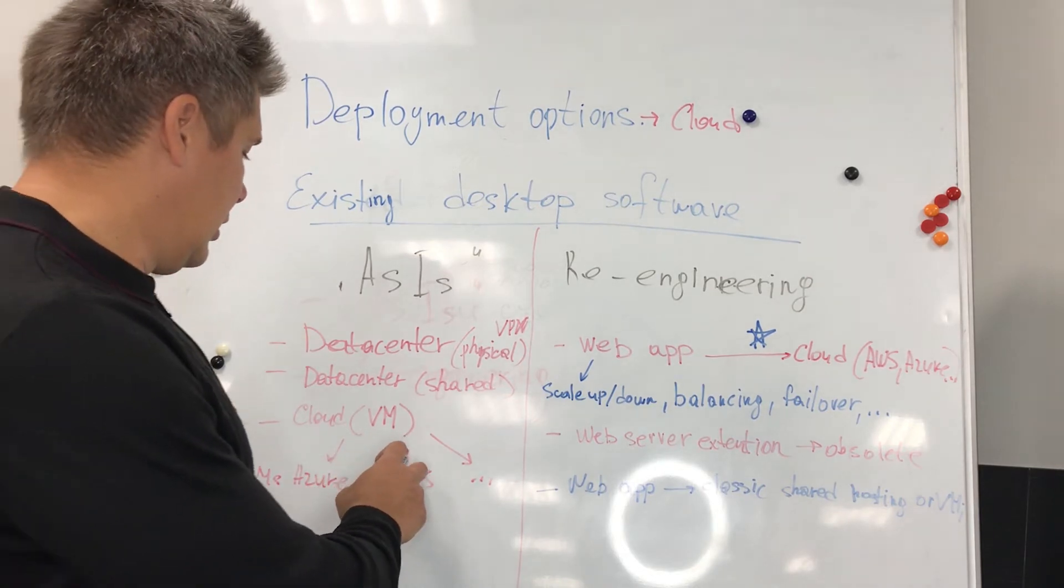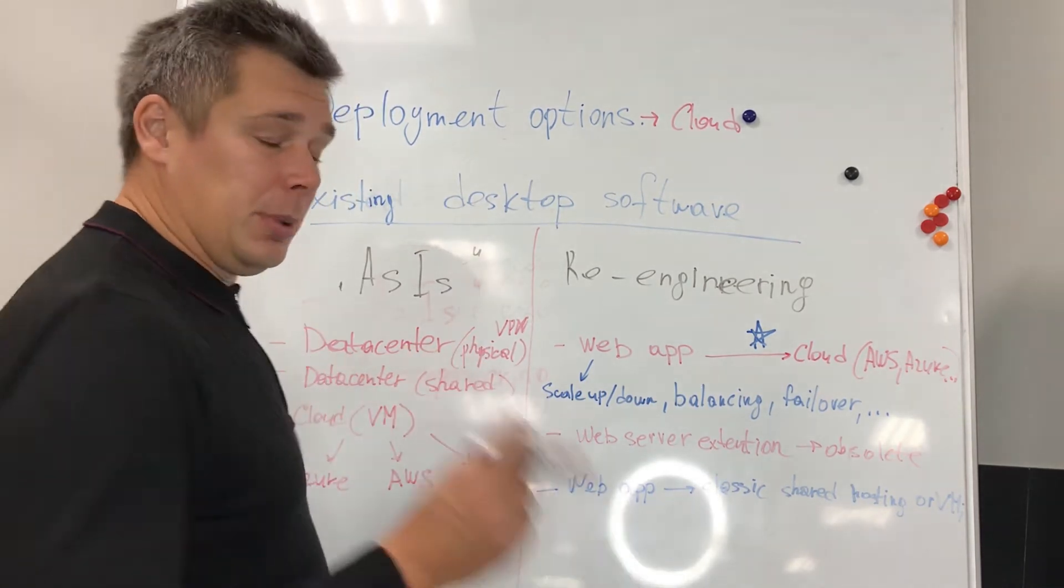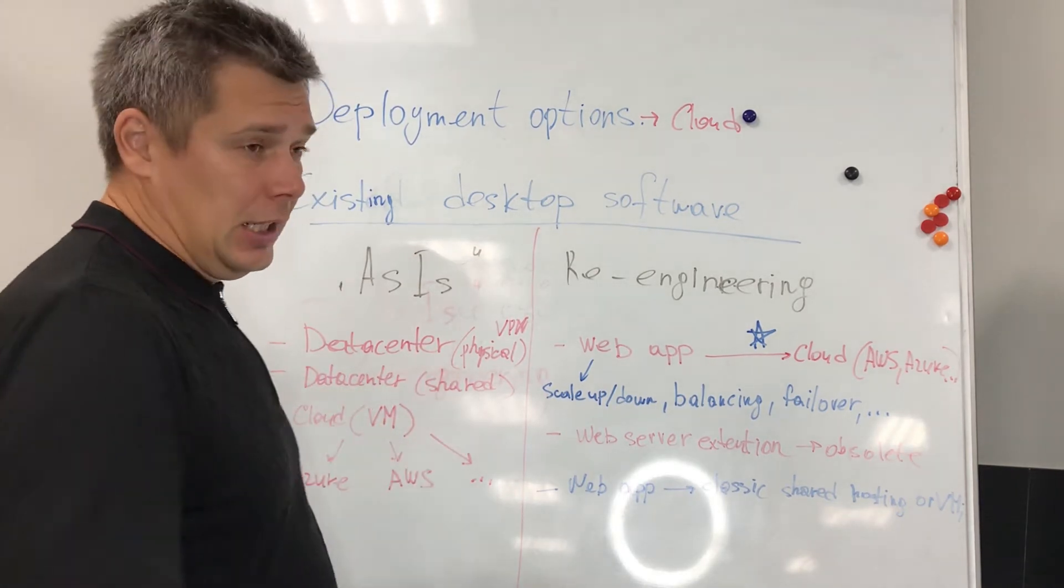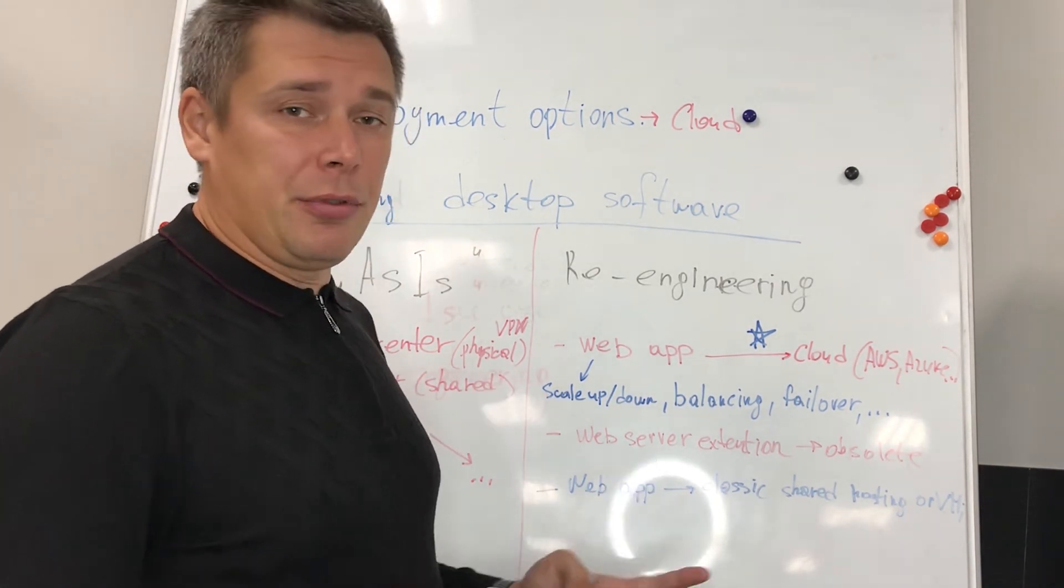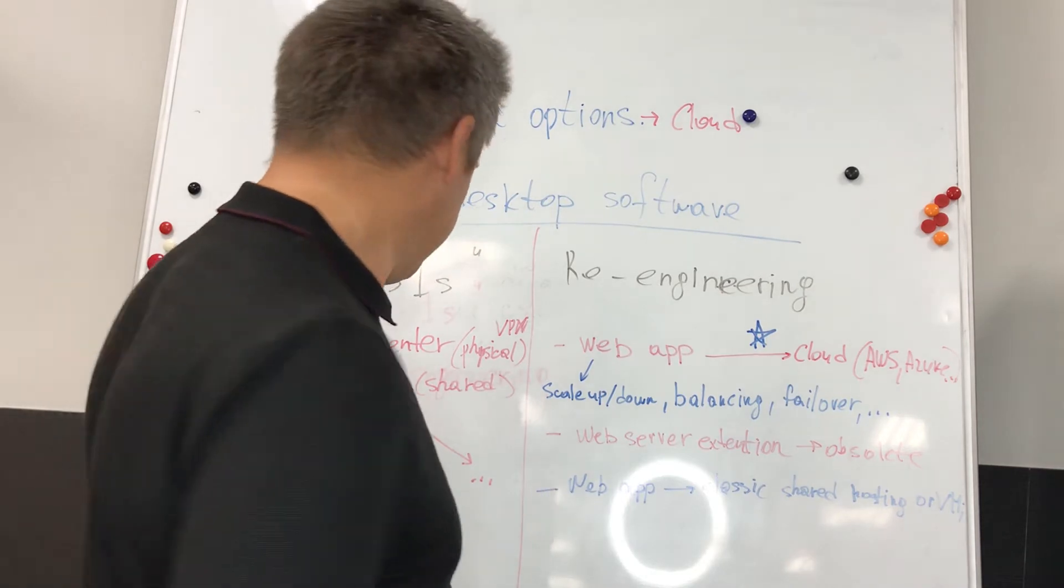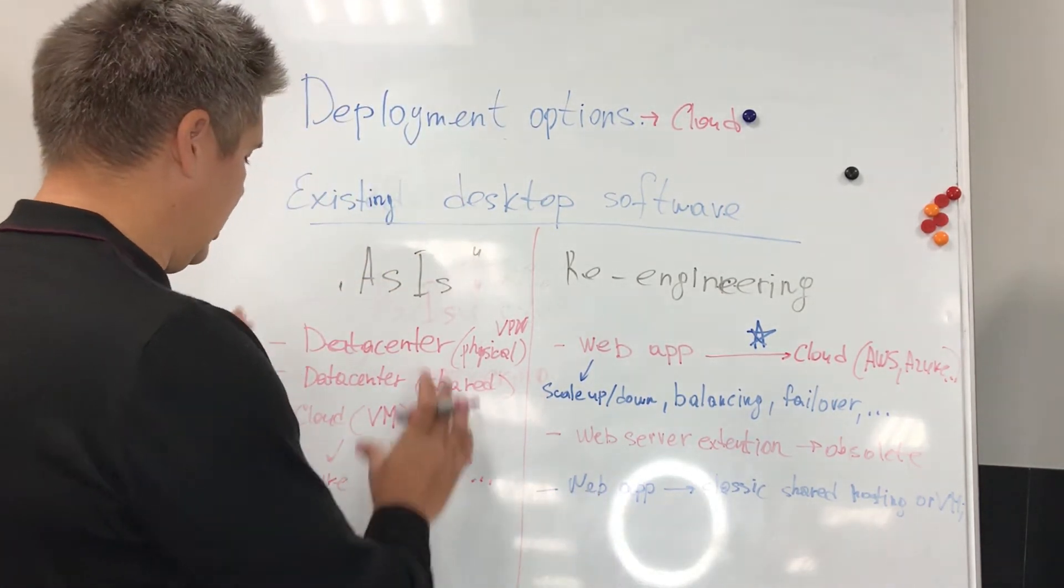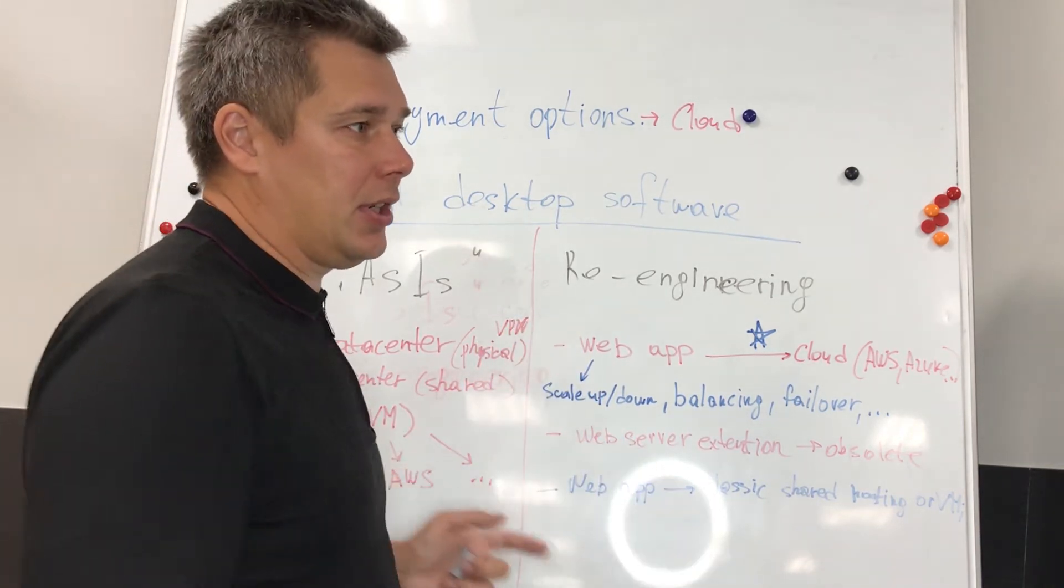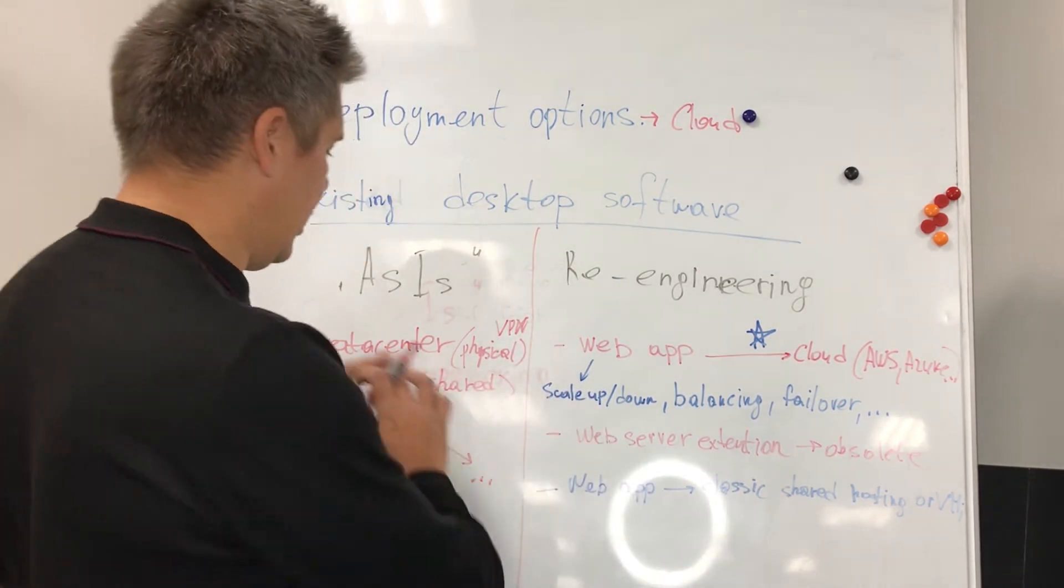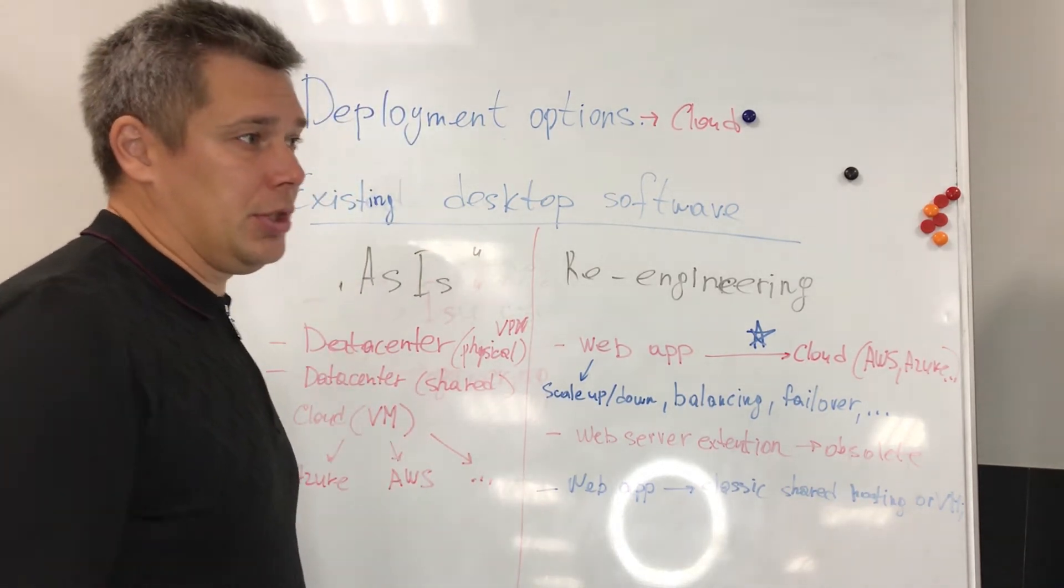Then we can deploy to the cloud. We should understand the differences between classical data center and cloud. When I'm talking about cloud, I'm talking about platforms like Azure, Microsoft Azure, or Amazon Web Services. It's totally different. It's a platform. The classical physical data center or hosting is not cloud. This is what we had 20 years ago. Cloud is brand new technologies.